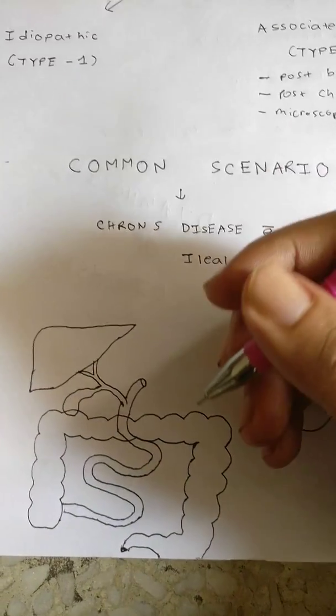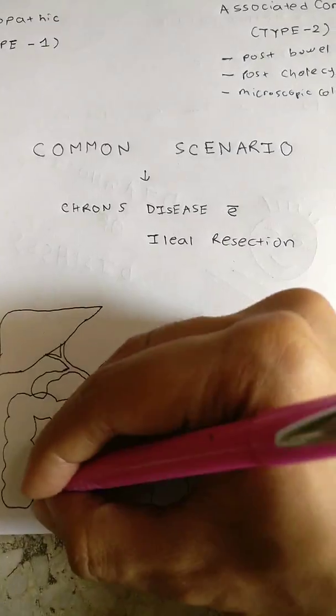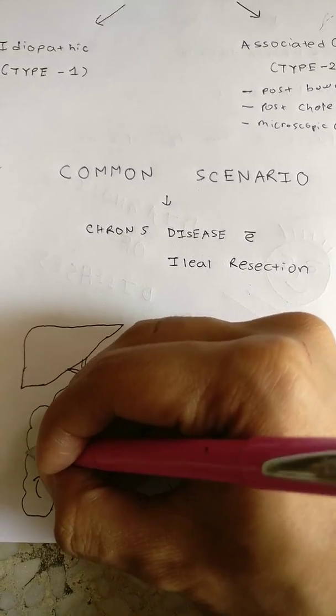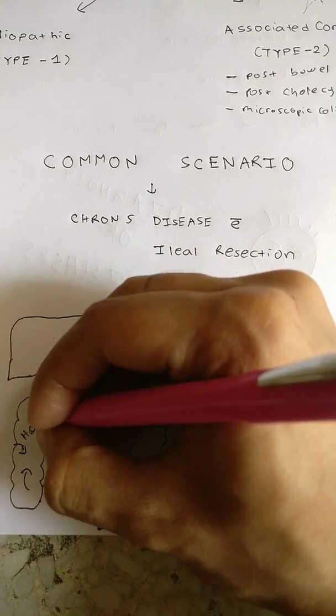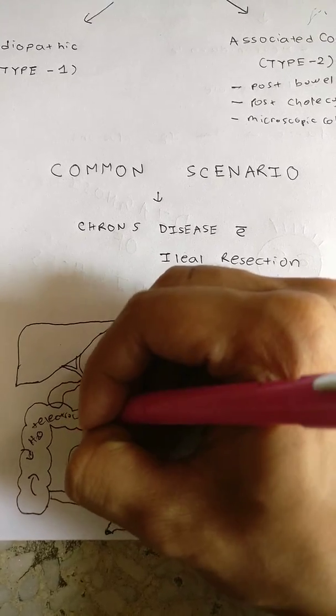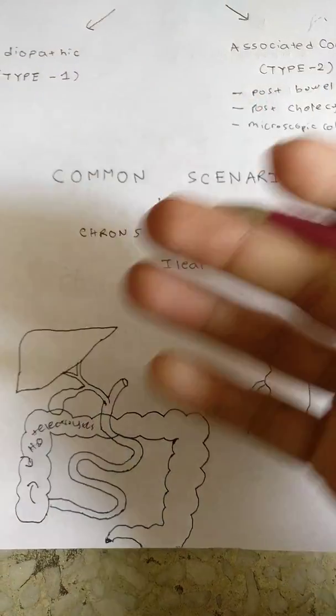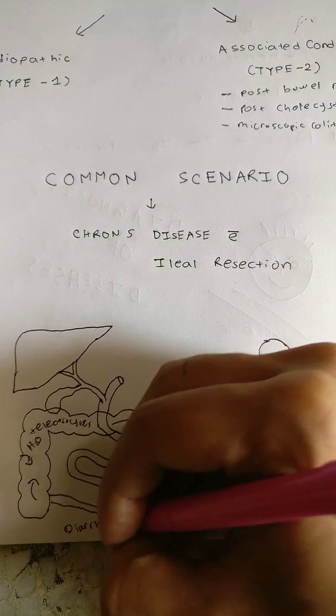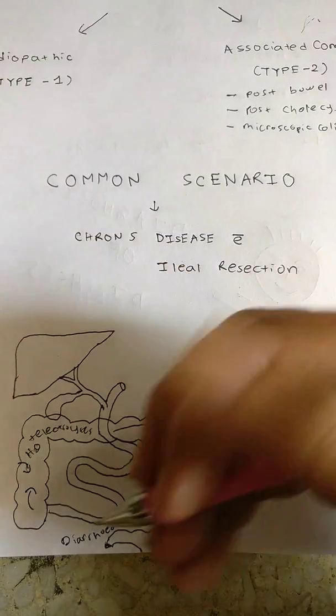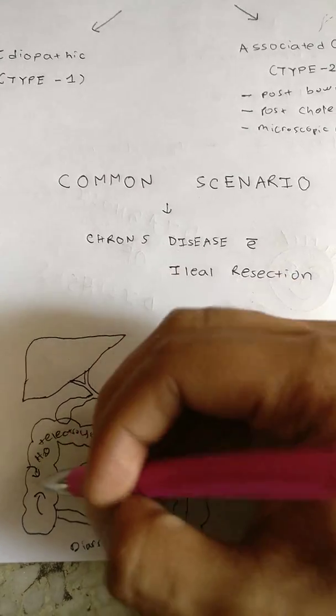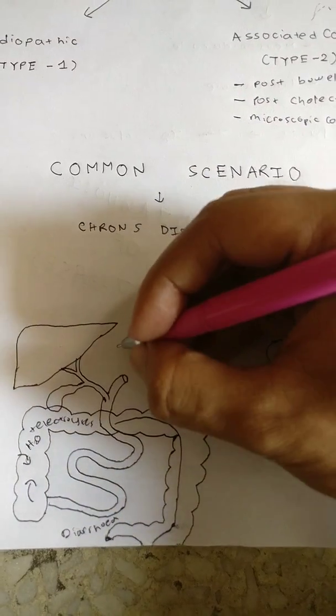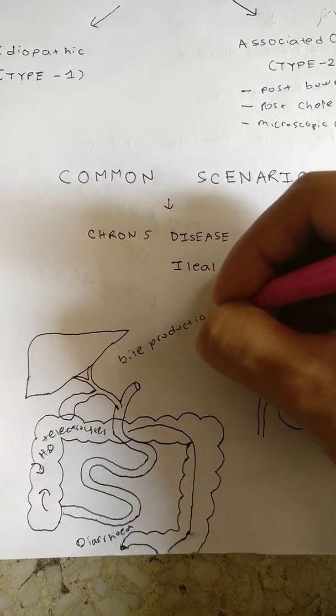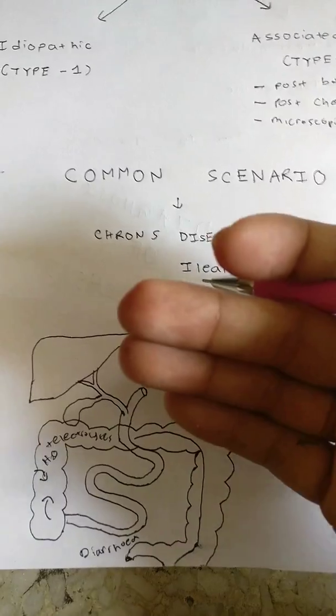This enterohepatic circulation is mainly disturbed. Therefore what happens is that the unabsorbed bile salts go into the colon and they stimulate this colon to secrete excessive amounts of water plus electrolytes. This excessive secretion of water and electrolytes will ultimately lead to the production of watery diarrhea.